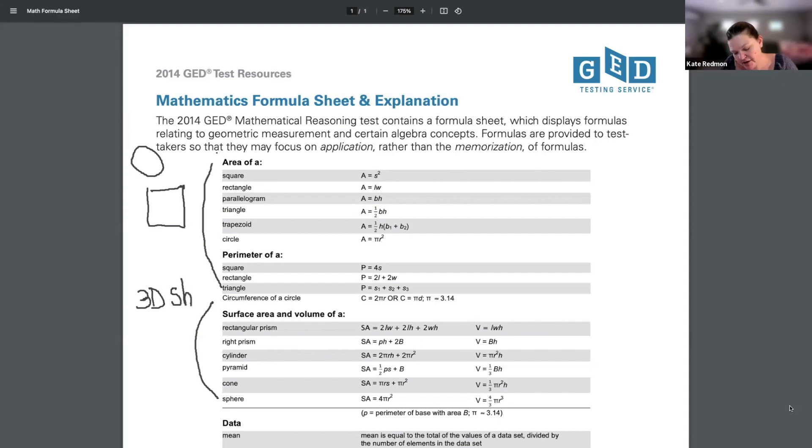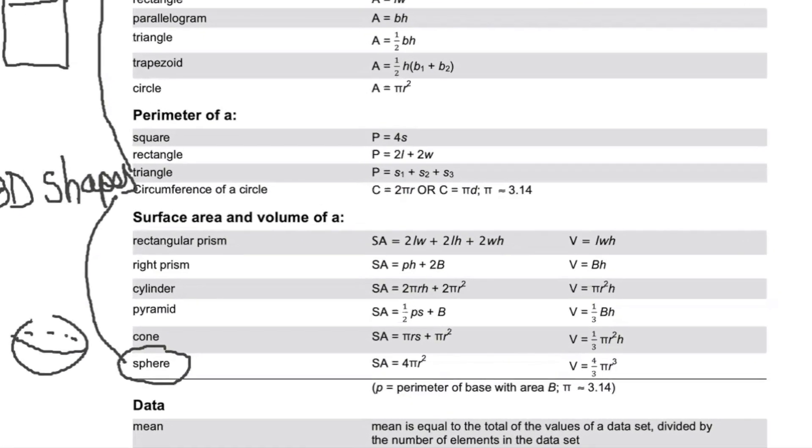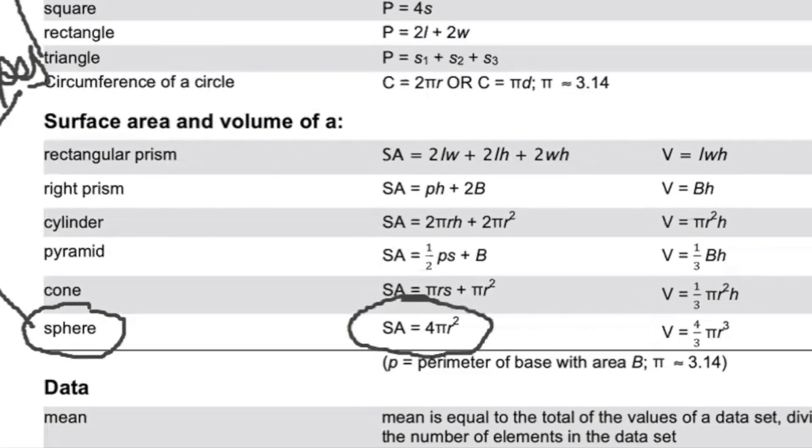Here is the formula sheet that you'll have access to as you take your GED math test. The first two sections here, area and perimeter, those apply to two-dimensional shapes like squares and circles. However, the next section, surface area and volume, those are our 3D shapes. And guys, I do highly recommend that you have one of these printed out if at all possible so you can mark it all up as we go through these videos and get really familiar with this formula sheet. But the surface area and volume refer to those 3D shapes. And you can see a sphere, which is basically just a ball, is a 3D shape there. And we have two formulas related to it. SA equals 4πr² and V equals (4/3)πr³.